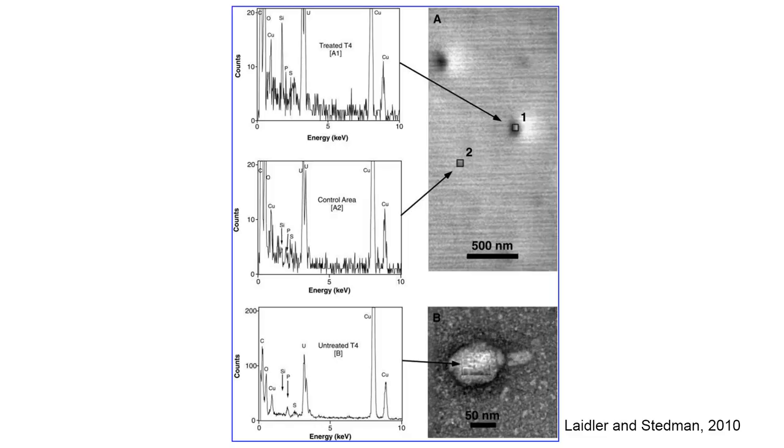These fossil viruses can be detected in silica by using energy dispersed x-ray spectrometry, looking for the element phosphorus, which is an element found in RNA and DNA. Phosphorus is very rare in silica, so tests could be developed in the future to detect phosphorus in silica rocks, as well as carbon isotopes to detect fossil viruses that cannot be seen underneath a microscope.